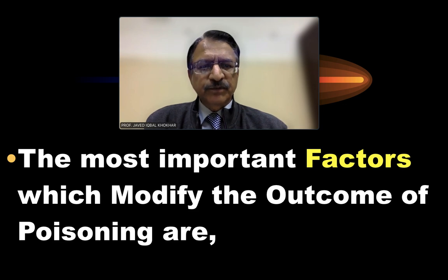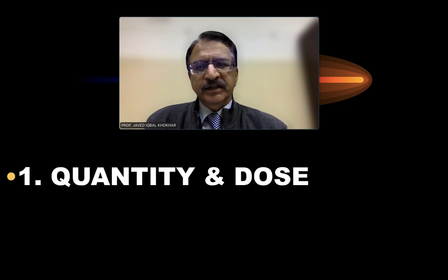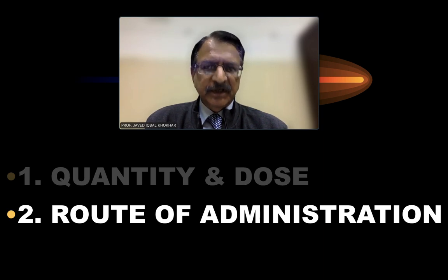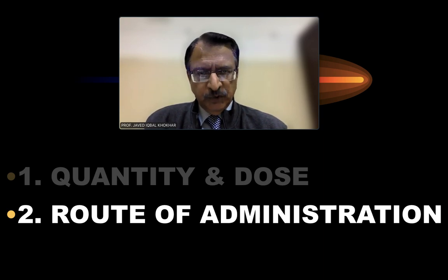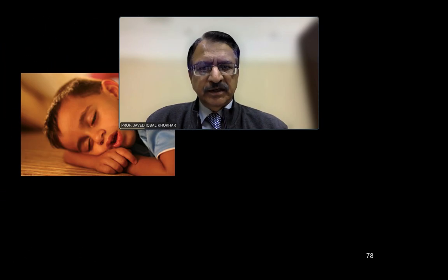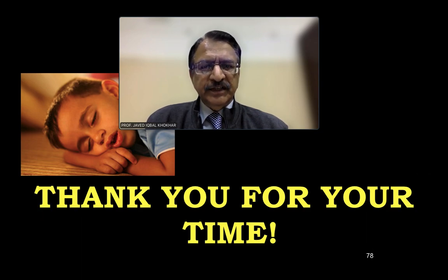To summarize, the most important factors modifying the outcome of poisoning are the quantity and dose, and the route of administration. The remaining factors are also important but these two are the most critical. Thank you very much; we will continue toxicology in the next lecture.